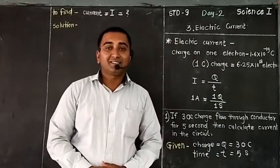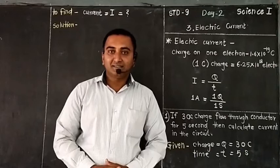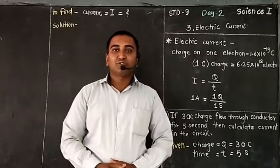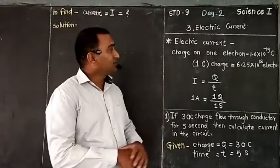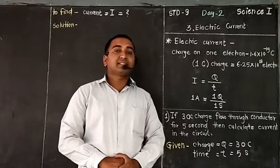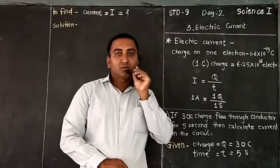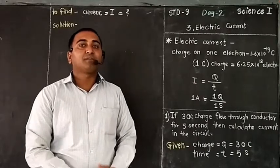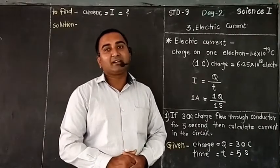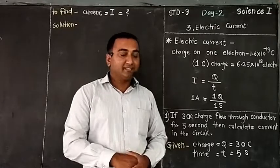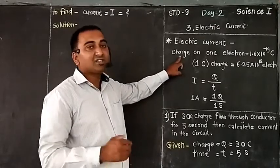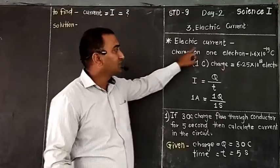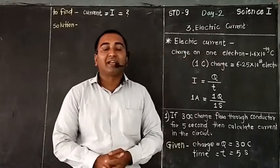Hello students, it is the second day of the third lesson, electric current, from science part 1st. What we discussed so far: first we discussed electric current. Electric current is a flow of electrons through a metallic conductor, or it is also defined as the flow of amount of charge passing through a metallic conductor in unit time — that means 1 second. Then we discussed what is the charge on one electron or proton. Proton has positive charge and electron has negative charge, that is 1.6 into 10 raised to minus 19 Coulomb charge.